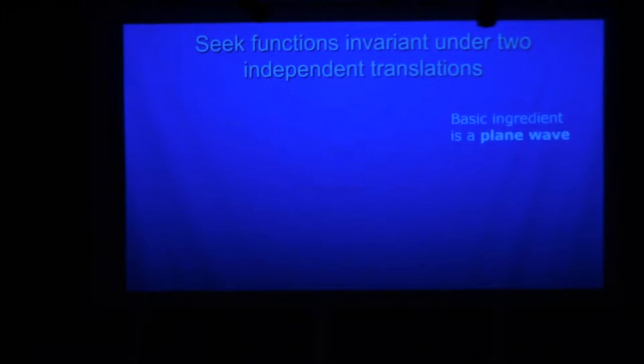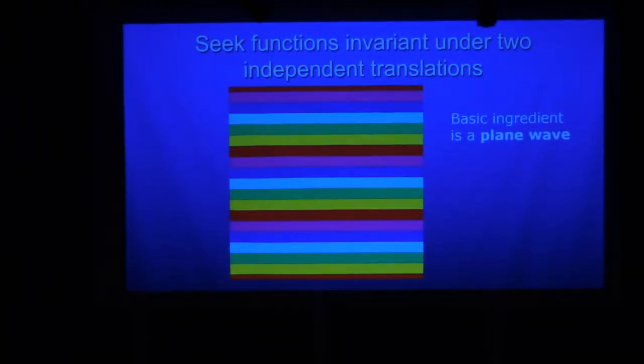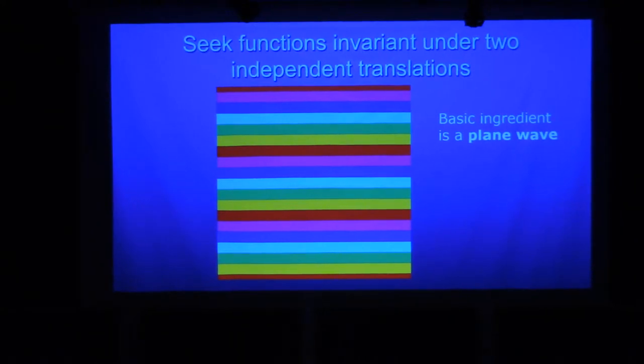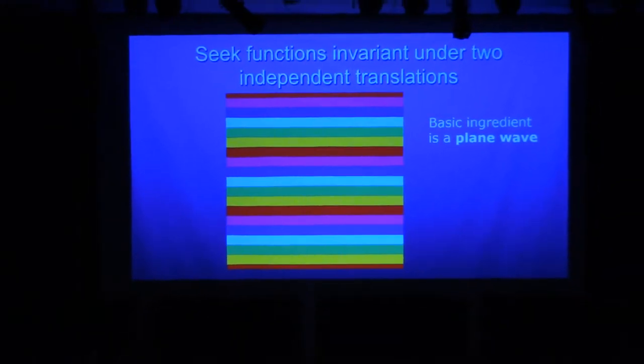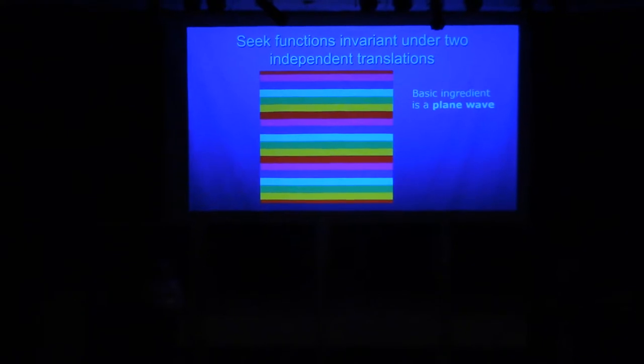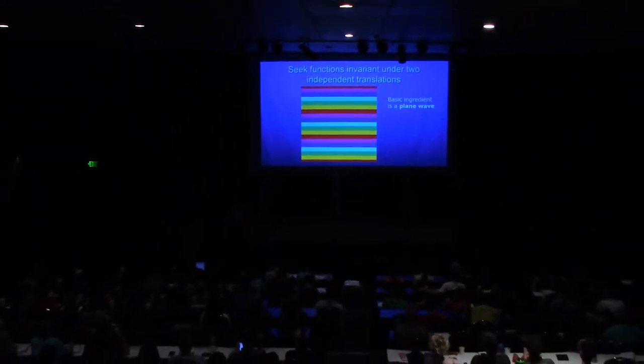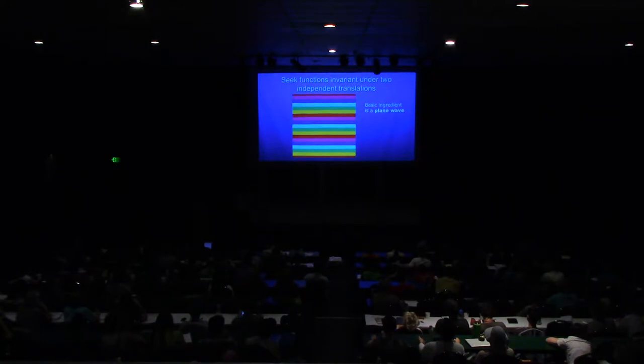I'm seeking functions that are invariant under two independent translations. The basic ingredient here is a plane wave. I'm thinking of waves as the big waves in the ocean, not the waves crashing on the shore. I really don't like singularities, despite my example with the singular string. These are very placid smooth waves. You could just think of these color bands as representing up and down of a very long slow wave. This is the basic ingredient, like the sine.